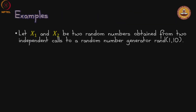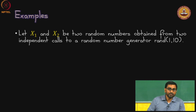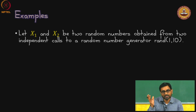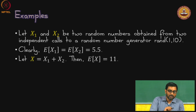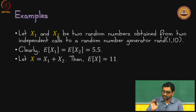Let us look at some examples. X1 and X2 are two random numbers obtained from two independent calls to a random number generator ranging from 1 to 10 — think of it as a 10-sided die. The expectation of X1 equals the expectation of X2 equals 5.5. Let X equal X1 plus X2; the expectation of X by linearity of expectation is 11.